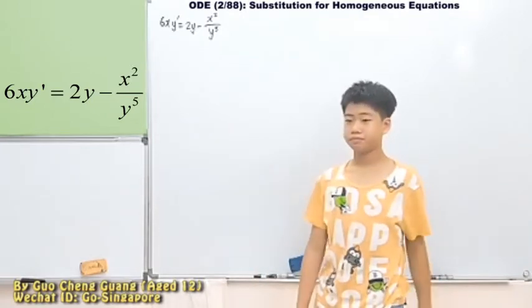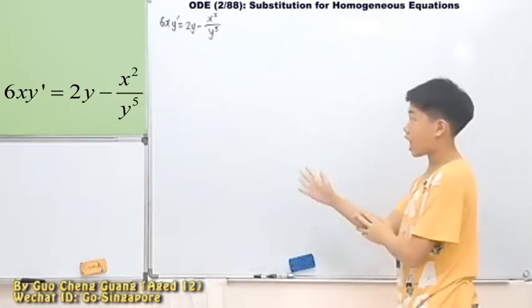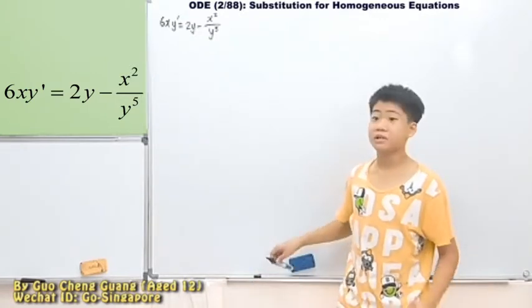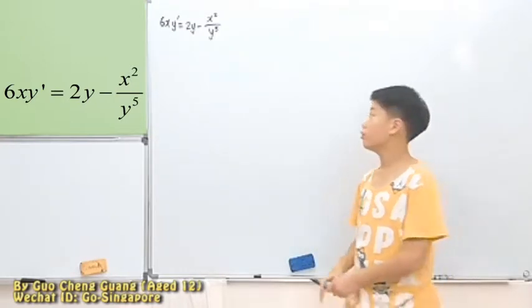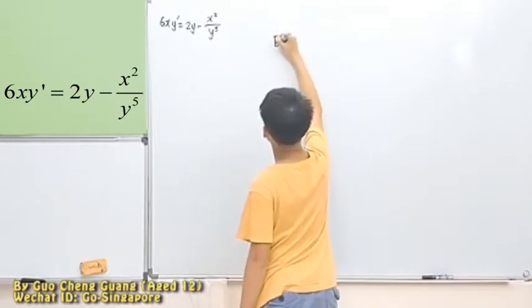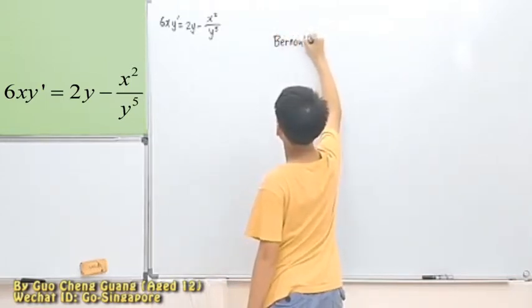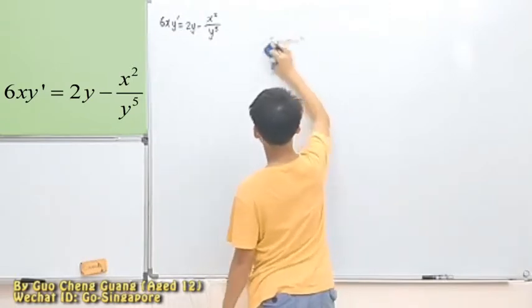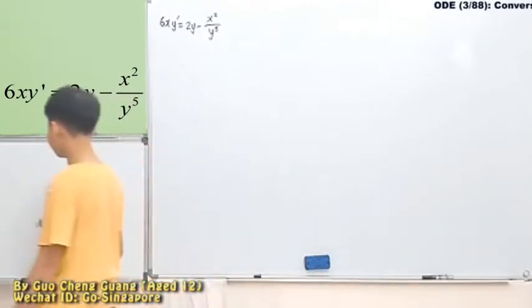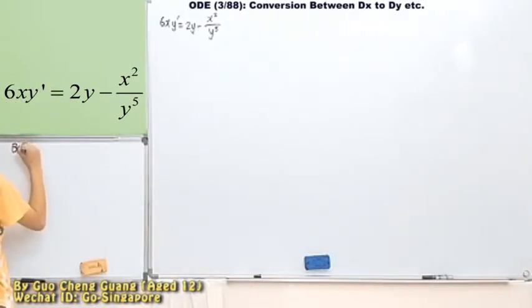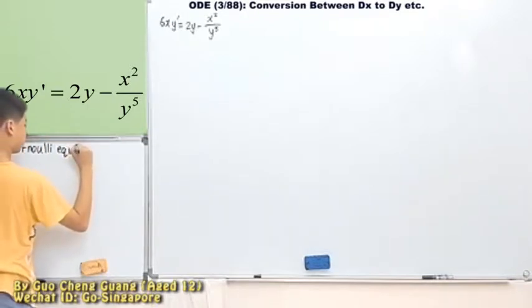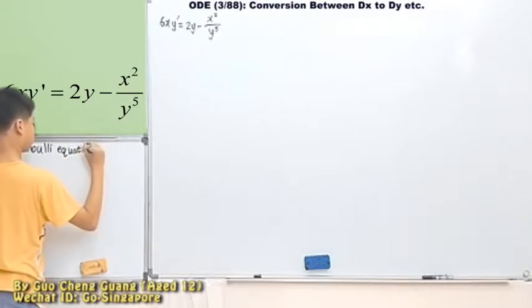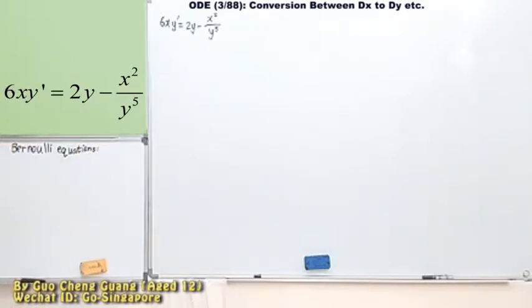This is first order. But for this type of equations, we do have a special name for it. And for this type of ordinary differential equations, we call it the Bernoulli equations. Okay, so this is for the Bernoulli equations. Let's take a look at what type of equations is general form.